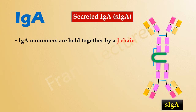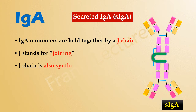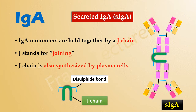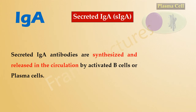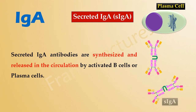J stands for joining, and the J-chain is also synthesized by plasma cells. This J-chain binds to the constant region of the IgA monomers through disulfide bonds. So, secreted immunoglobulin A are the IgA antibodies synthesized and released into the circulation by activated B cells or plasma cells.